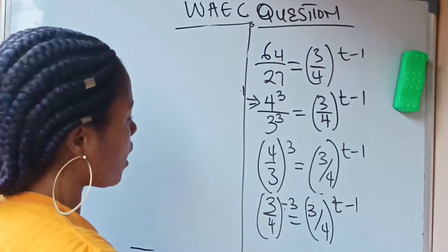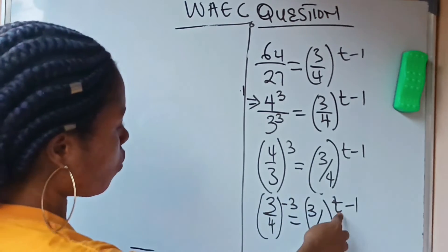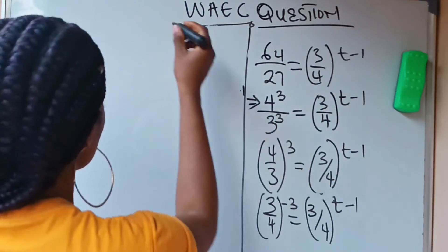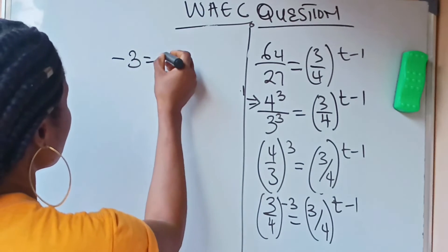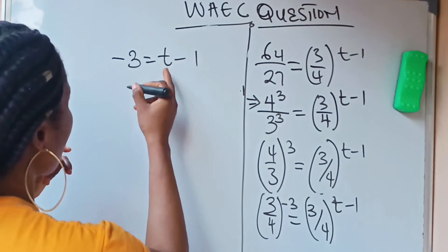Now looking at this, if this and this are equal, that means minus 3 is equal to t minus 1. So we can write that minus 3 is equal to t minus 1.